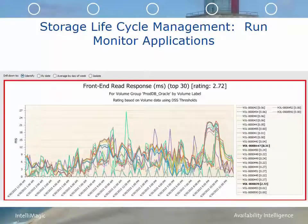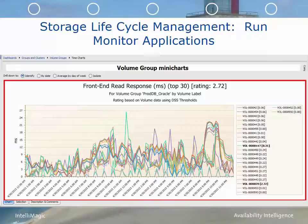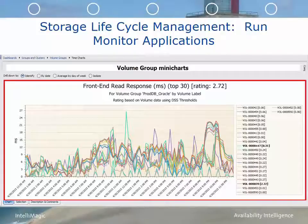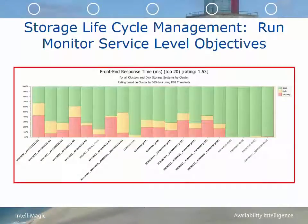During the run phase, you're going to want to monitor your key applications and how their storage performance is doing. Here we're looking at ProdDB Oracle, which we noticed in earlier dashboards had performance issues highlighted in the read response time and other response metrics. In this chart, I've drilled down to the volumes in question, and I can see there are a couple volumes — particularly volume 000039 and volume 000447 — that are in bold and are having the worst response time. This is one example of how you might monitor key applications and ensure they have the performance the user is expecting. It's also important to monitor the SLOs of the ESX and other clusters, shown here in a chart of front-end response time SLOs for a number of clustered systems.